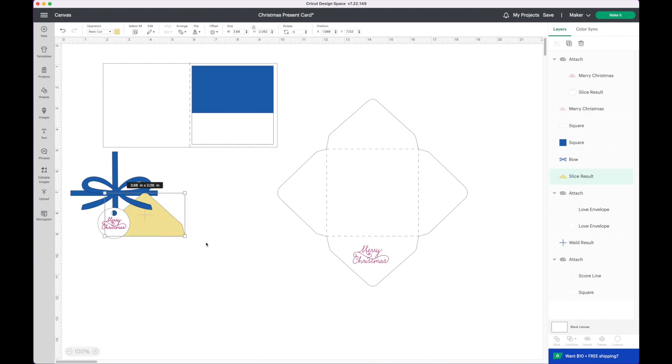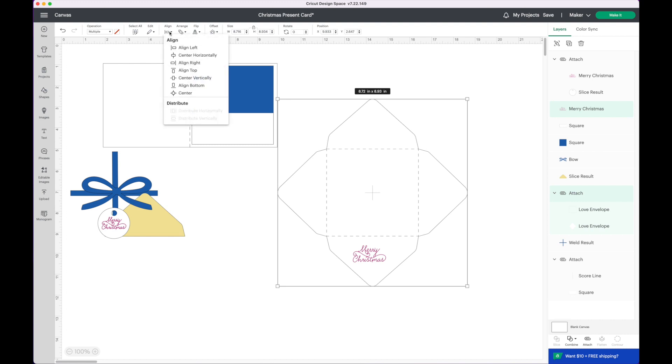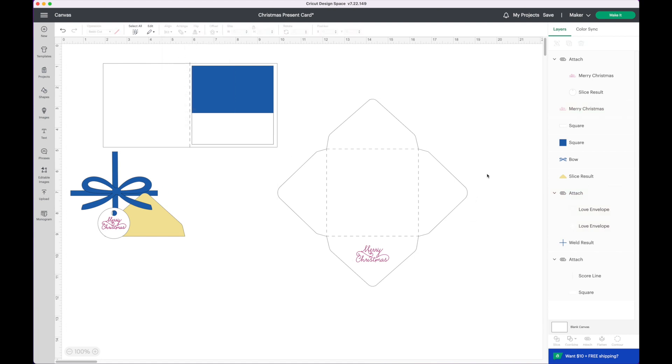So what I'm going to do is maybe make it be a little bit smaller and I'm going to center this. So I'm going to click on the text, hold down shift on my keyboard, click on the envelope, go to the top toolbar and we're going to click align and we're going to do the second one down. Center horizontally so it'll center it left and right. So I click on that you'll see my Merry Christmas move. I know it's centered.